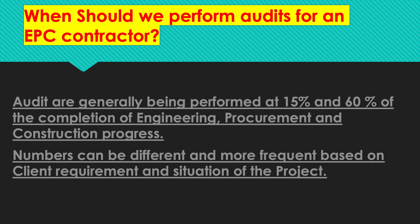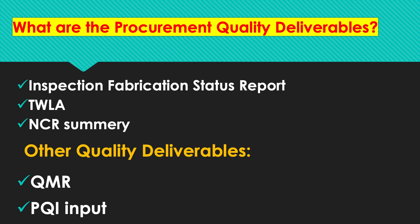What are the procurement quality deliverables? The regular deliverables are: inspection fabrication status report from all vendors together in a log, a two-weeks look-ahead for all vendor activities ongoing, and the NCR summary. Other quality deliverables can be a quality management report and input for the project quality index.